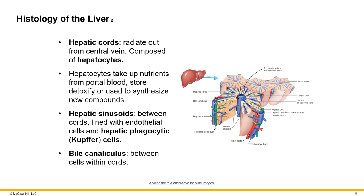The most common cells in the liver are called hepatocytes. Hepatocytes contain many peroxisomes, which are sites for chemical reactions including detoxification of compounds such as drugs and waste materials. The macrophage cells of the liver are called Kupffer cells, also known as hepatic phagocytic cells.